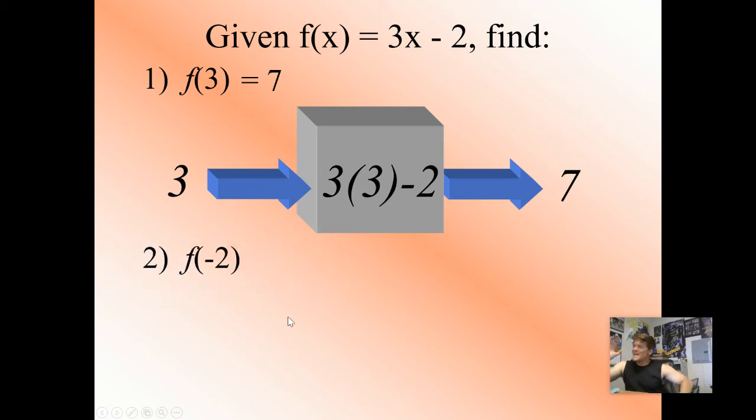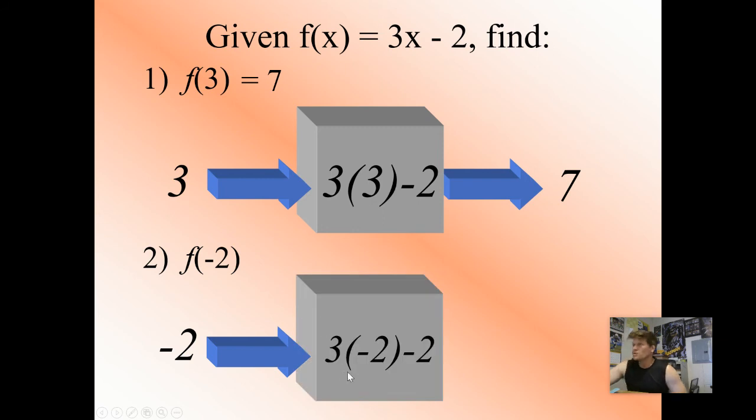Here's another one. Same function. So we have f(-2). Again, taking that input, plug it into my function, replacing the variables with my value. So I have 3 times -2 now minus 2. 3 times -2 is -6. -6 minus 2 gives me an output of -8. So f(-2) = -8.